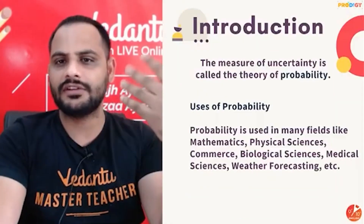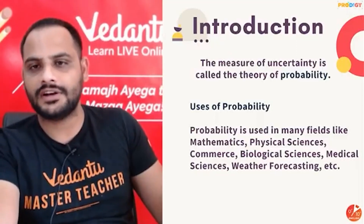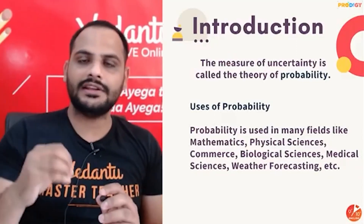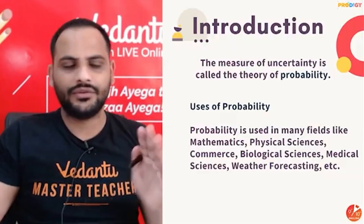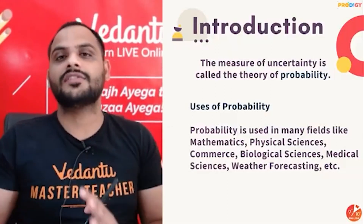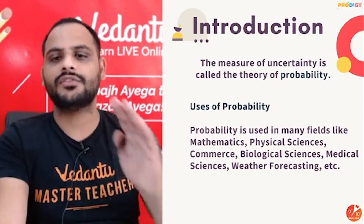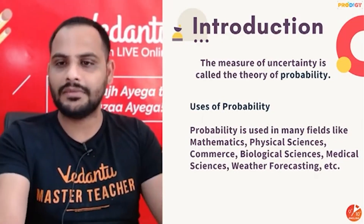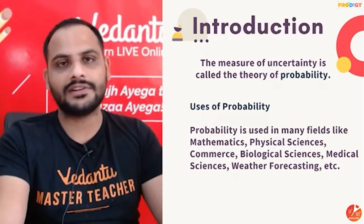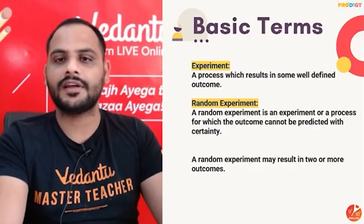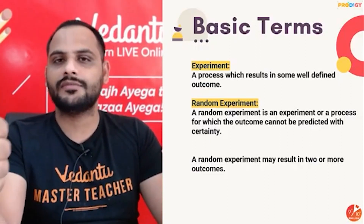Probability is the measure of uncertainty — that means calculating the chances of happening of something or not happening of something. Whether it will happen or not, what are the chances of it — mathematically calculating it is called probability. It is used in various fields like mathematics, physical sciences, commerce, biological sciences, and various other fields.